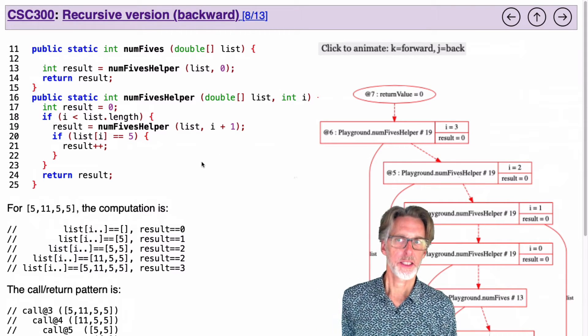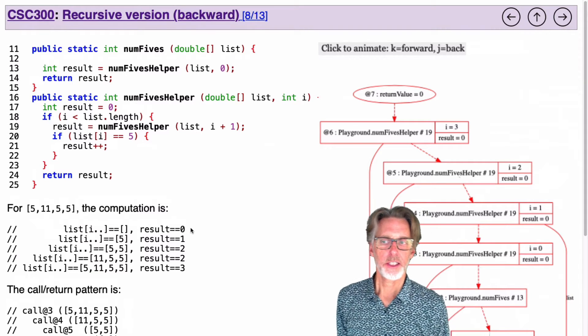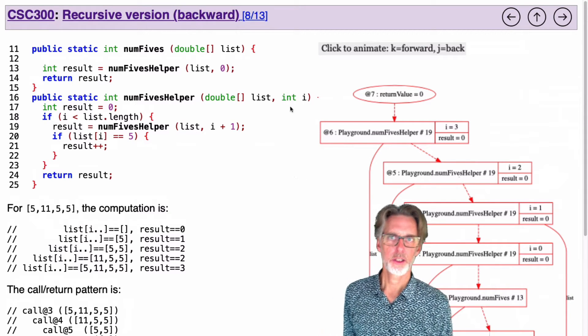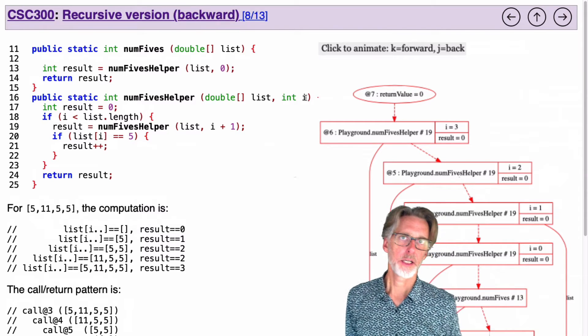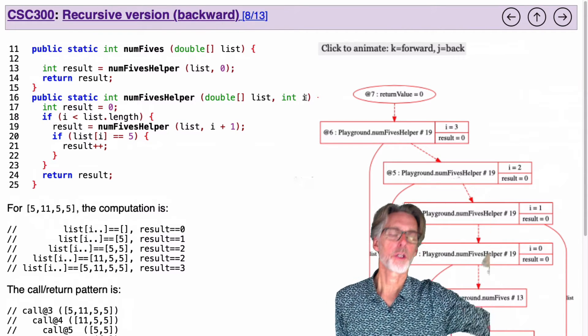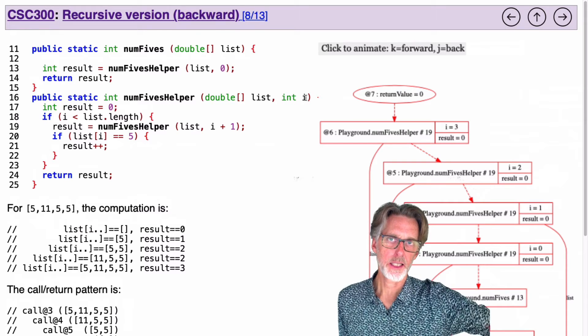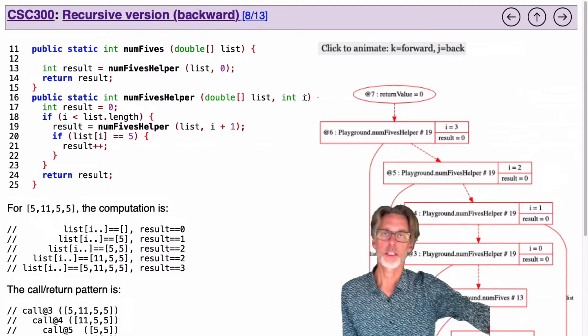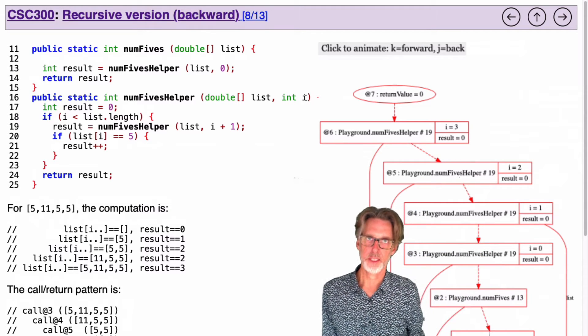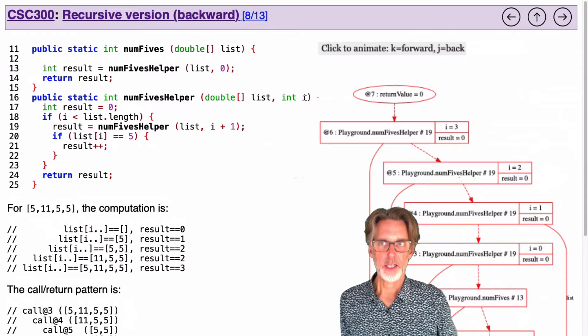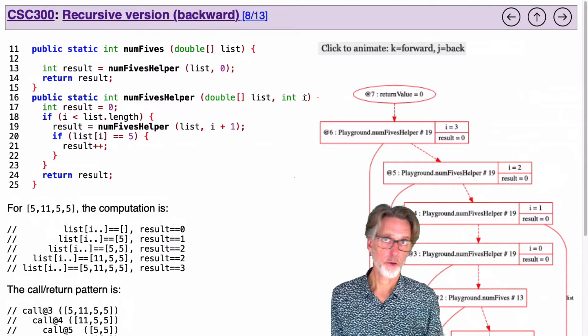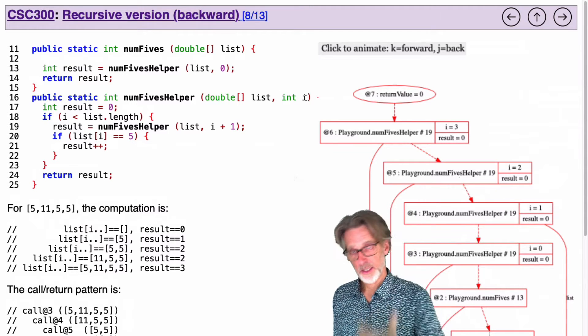Formally, what's the difference? Well, the difference here is that I don't need a result parameter in my function because I'm not computing the result going forward. Instead, the result is the return value of this function, and I use that return value in order to compute the result going backwards.